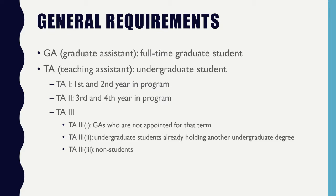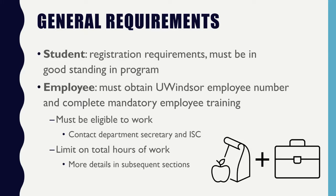TA3s can be a few different things, including people who are GAs but not appointed for that term, or they may not be a student, or they could be an undergraduate student who is already holding a degree. When you fill out your contract — which most of you have probably already done — that's where it will show what level of TA you are or if you are a GA.